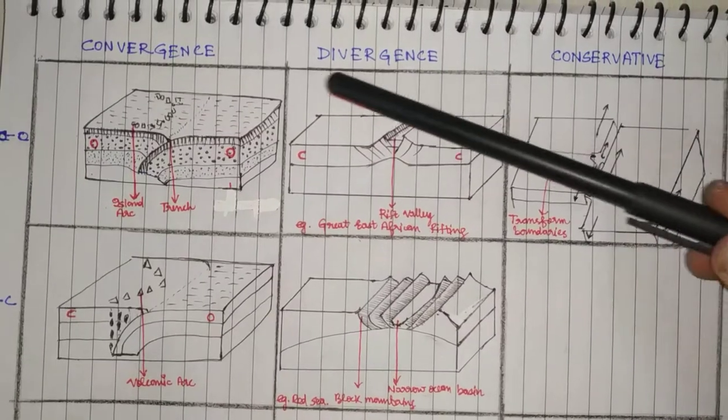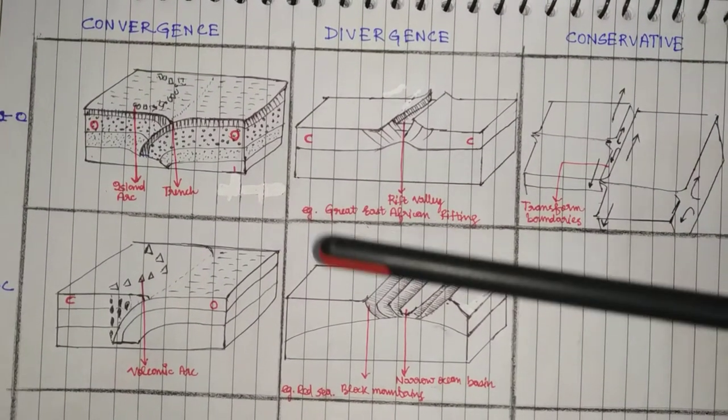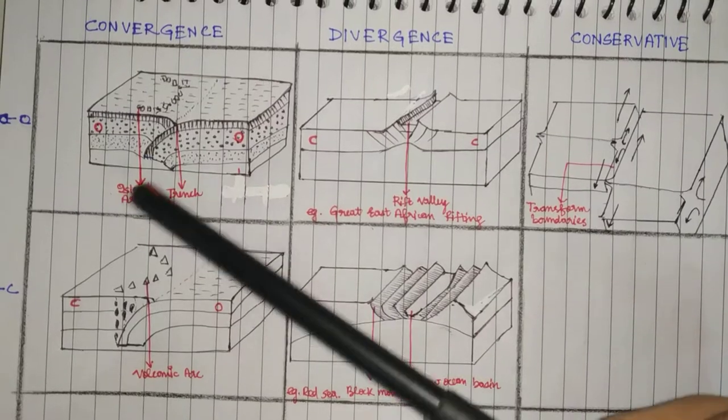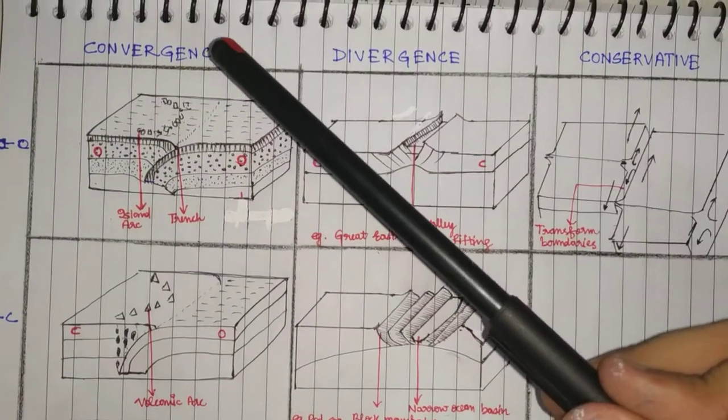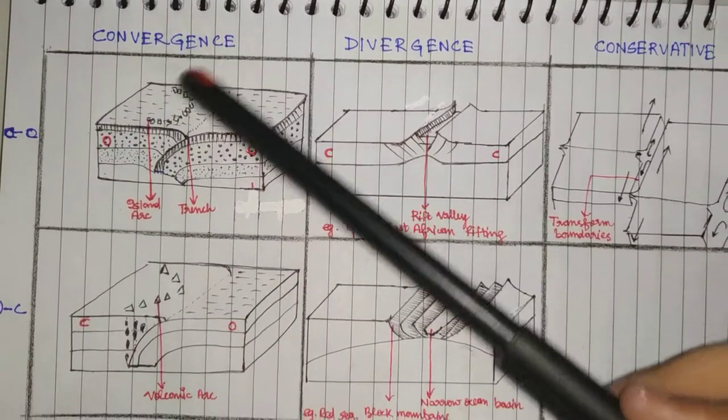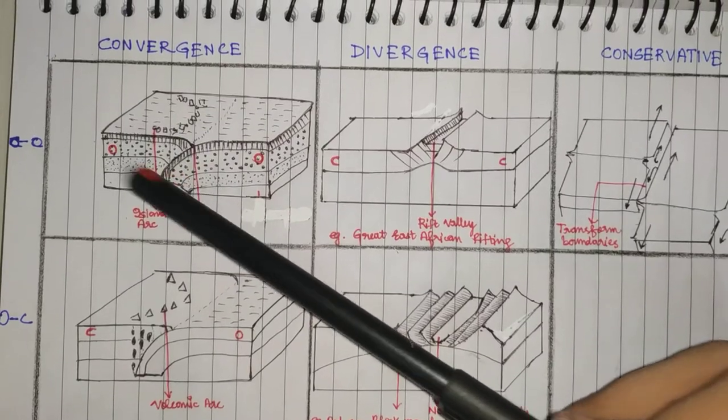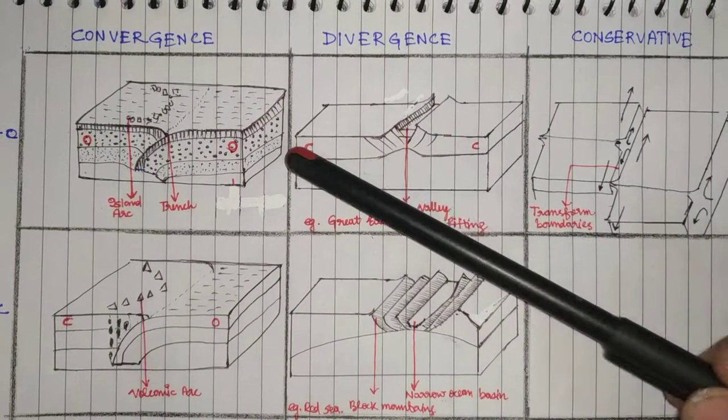If it's a divergence, that is, it's a kind of constructive boundary - by the way, the previous was destructive boundary because of convergence of the plate. Here it's a divergence boundary, that is, the plates are drifting apart, they are diverging.